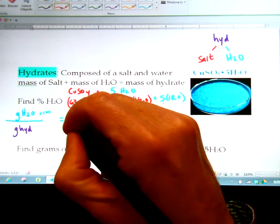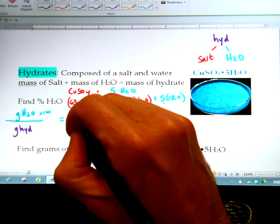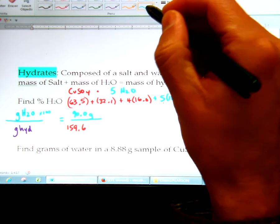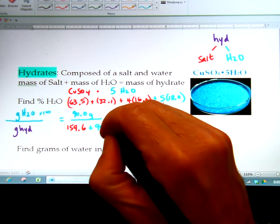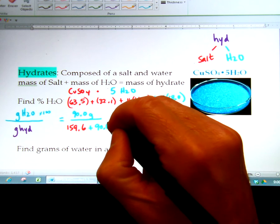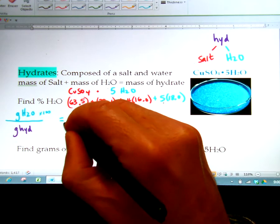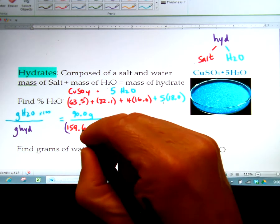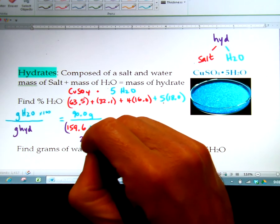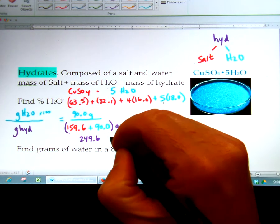And then if we do 63.5 plus 32.1 plus 4 times 16, that's going to be the salt is 159.6. And then we add that water into it, which is 90. So the whole thing on the bottom weighs 249.6. So this is 249.6 grams.